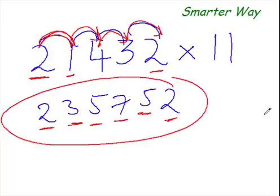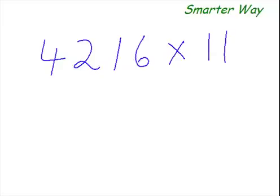I can see the smile on your face. You must be thinking, why on earth was I doing it the harder way all my life? So, let's find out what is 4216 times 11. And you do it this time.